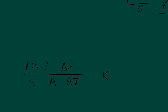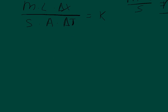The most important thing now is to make sure all numbers are in the right units. The mass of ice is 5 kilograms. The latent heat of water at freezing is 3.33 × 10⁵, or 333,000 joules per kilogram. For the time, we convert 8.5 hours by multiplying by 3,600 seconds per hour, giving approximately 30,600 seconds.